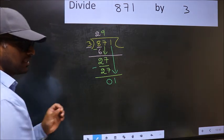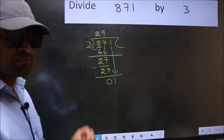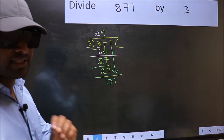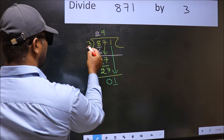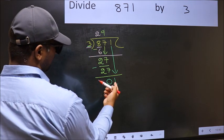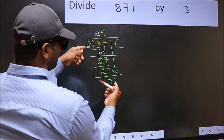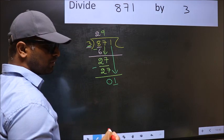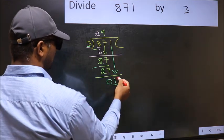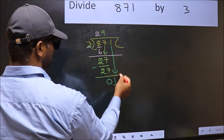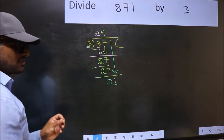After this step, the mistake happens. And the mistake is this: here we have 1 and here 3. 1 is smaller than 3, so what many do is they directly put a dot and take 0. Which is wrong.